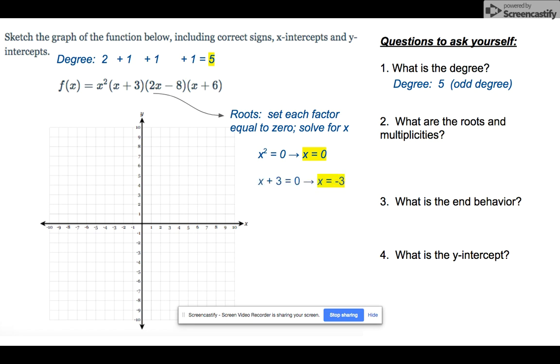x plus 3 equals 0, x equals negative 3 will be another root. 2x minus 8 equals 0, we're going to add 8 to both sides and then divide by 2, I get x equals 4. That's another root. And x plus 6 equals 0, x equals negative 6.